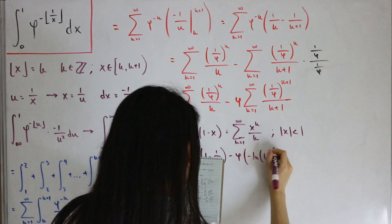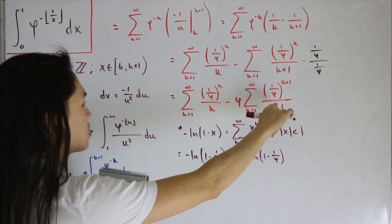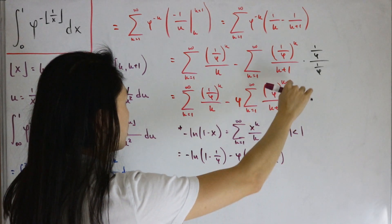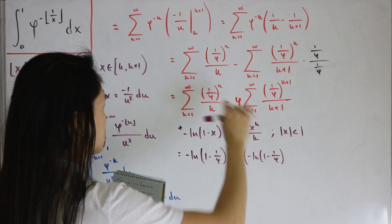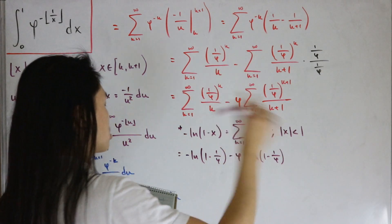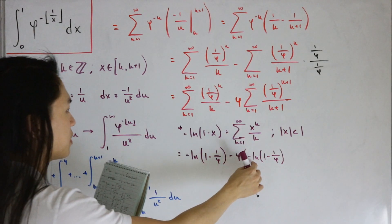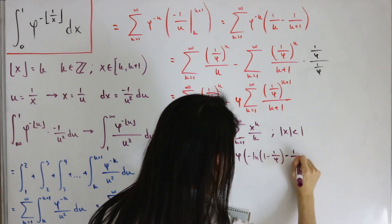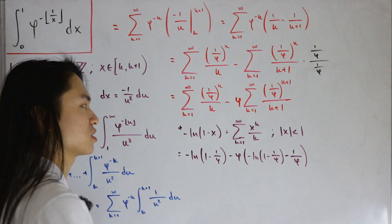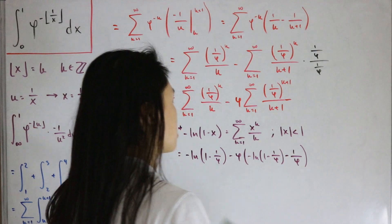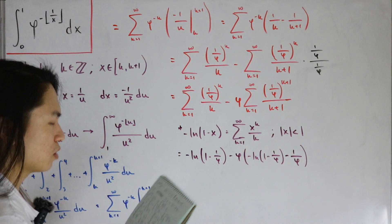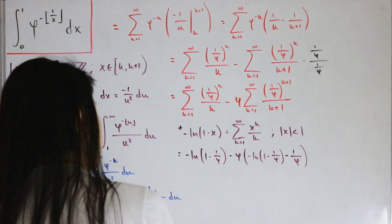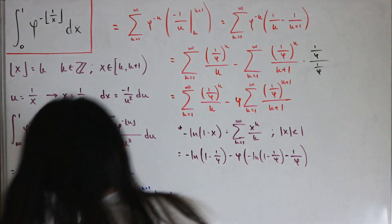However, the second sum starts at k+1 = 2, so it's missing the k=1 term from the full expansion. We must subtract that term, which is (1/φ)^1 / 1 = 1/φ. Now, note that 1 - 1/φ = 1/φ² — a well-known golden ratio identity. So -ln(1 - 1/φ) = -ln(1/φ²) = 2·ln(φ).